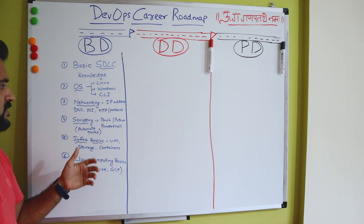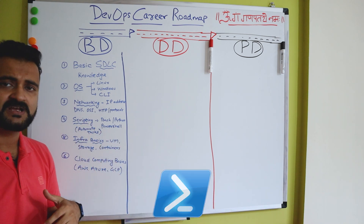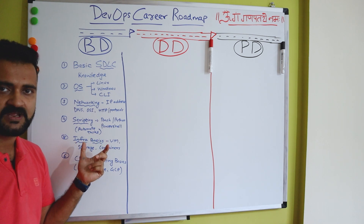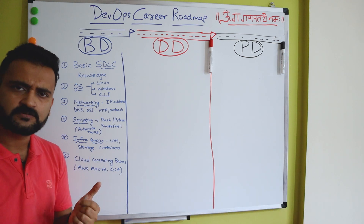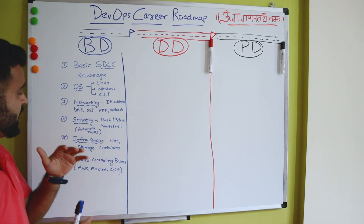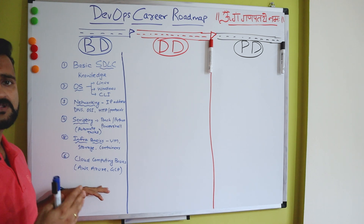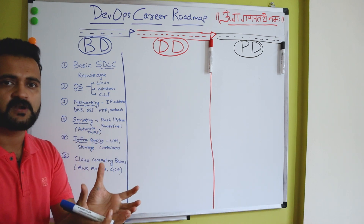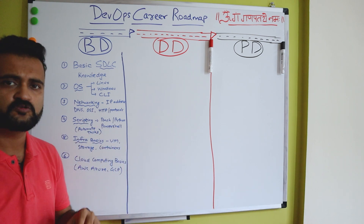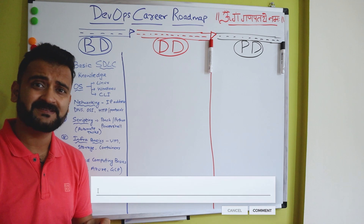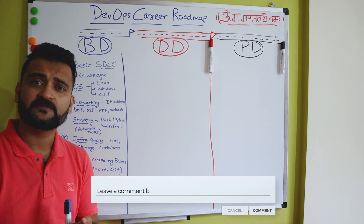Scripting is very important — using Bash, Python, or PowerShell — because you need to automate a lot of stuff in DevOps. Infrastructure basics are also needed: how virtual machines work, what virtualization is, what containers are, how database storage works. And last but not least is cloud computing, because everything sits on this bedrock of cloud right now. You need to know the basic fundamentals of cloud computing.